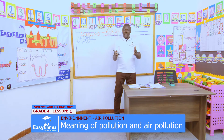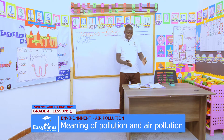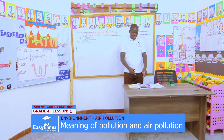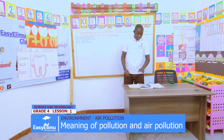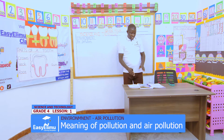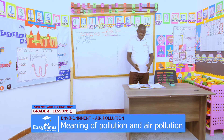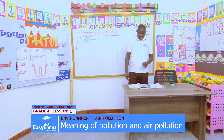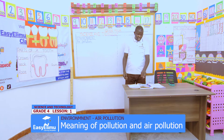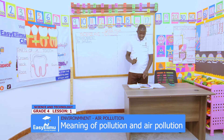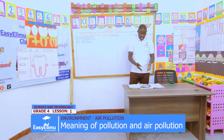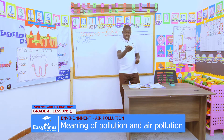Now I want us to pair in two and look at the pictures that we have in our textbooks. In the pictures, what can you see? In pairs, the first person — from you, Tom — what can you see in the first picture? Someone cooking, but there is a lot of smoke from the kitchen. Correct.